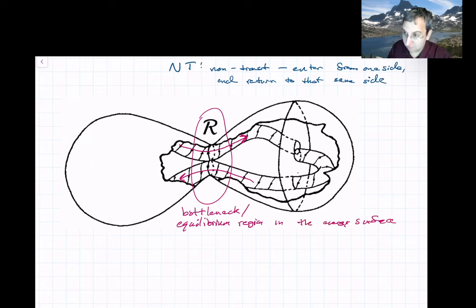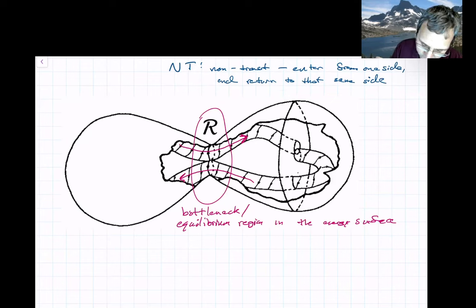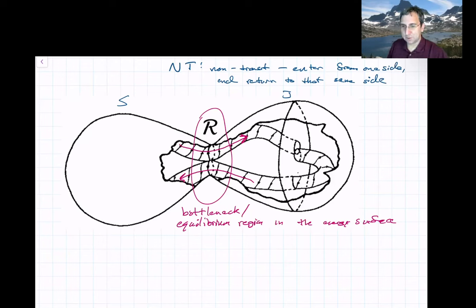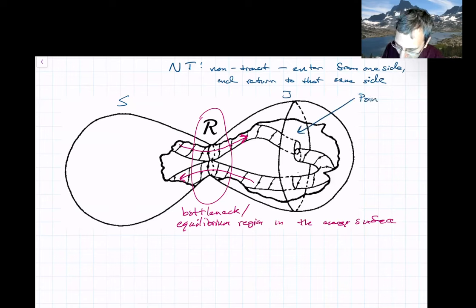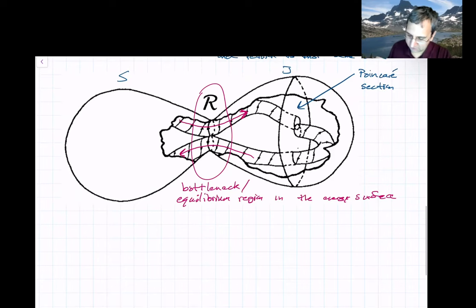This is all in the energy surface. You've chosen some fixed energy; trajectories in the three-body problem conserve energy, so they move on this three-dimensional two-lobed shape — like an hourglass on its side — representing the Earth region and Moon region, or Sun and Jupiter regions. Computationally, the way we connect up things that are transiting from one side to the other is by looking on what's called a Poincaré section, which deserves a bit more discussion.